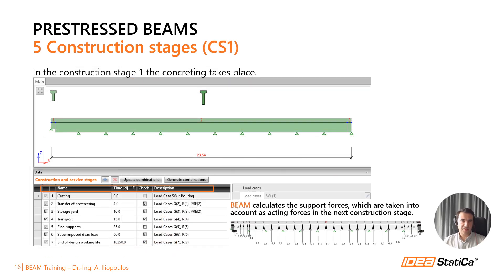Construction stage 1 includes the concreting of our beam. During this stage, the beam is supported. The support forces from this construction stage are then used as the dead load for construction stage 2.